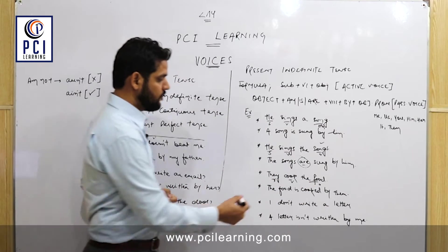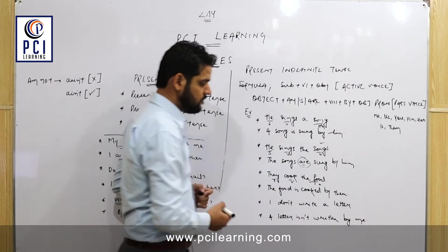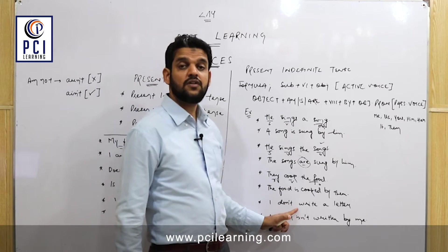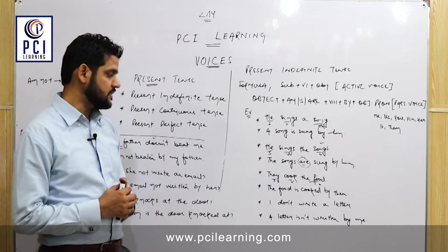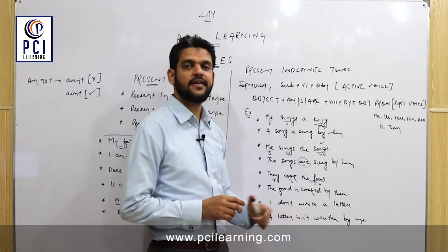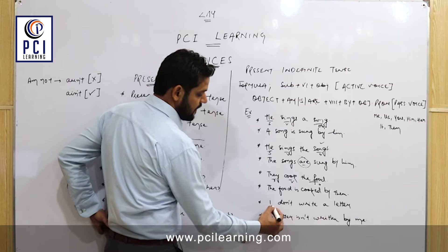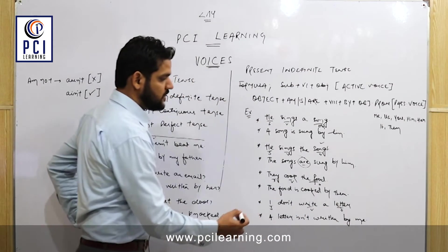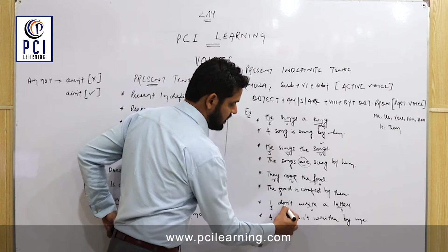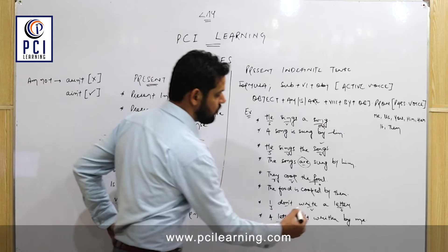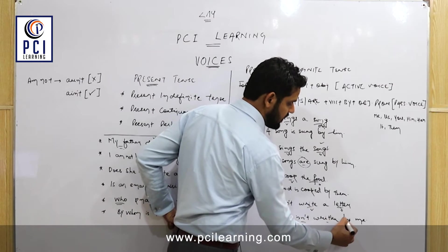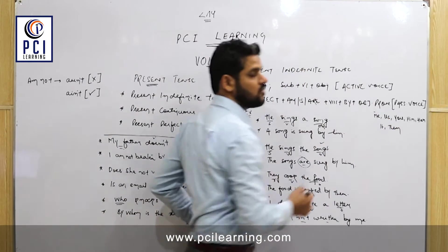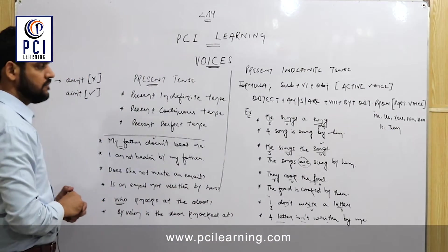Another example: 'They cook the food' becomes 'The food is cooked by them.' Now a negative example: 'I don't write a letter' — the passive voice is 'A letter is not written by me.' The subject 'I' changes to the first person object pronoun 'me', and 'don't' is replaced by 'is not'.